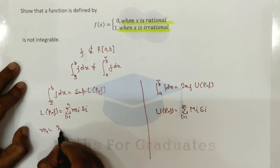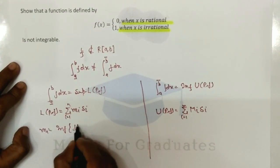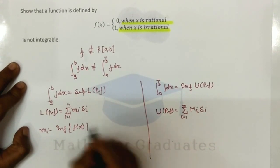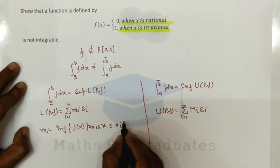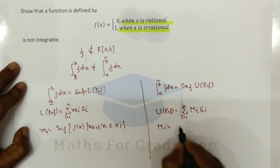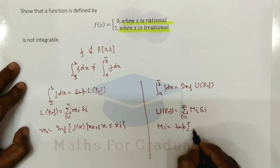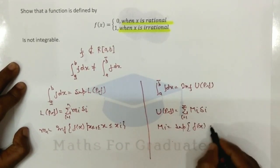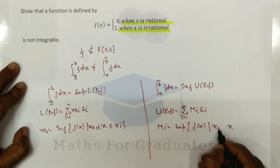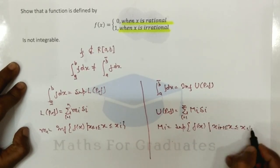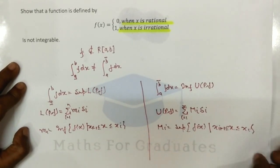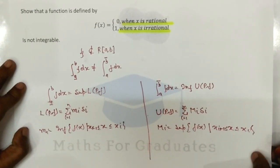Small m_i is the infimum of the function in the interval [x_{i-1}, x_i], and capital M_i is the supremum of the function in the interval [x_{i-1}, x_i]. Now for this we have to prove that the function is not Riemann integrable.